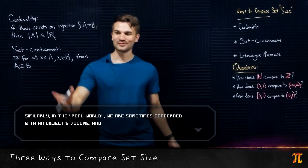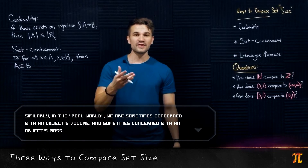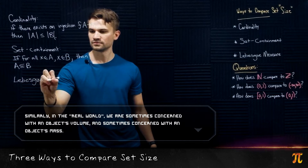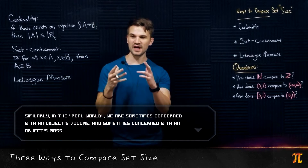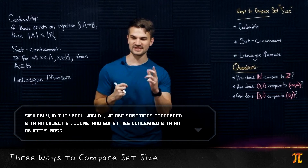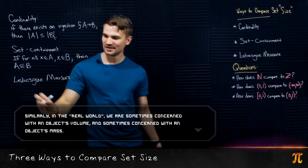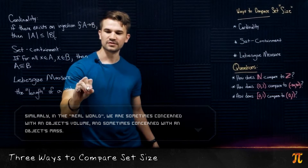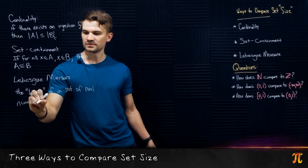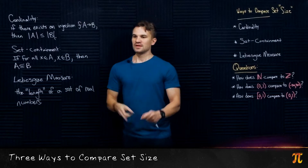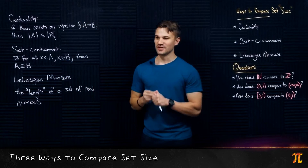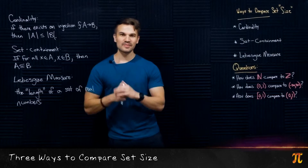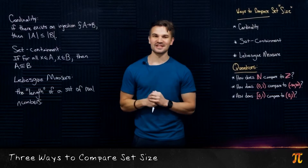Sometimes one of them is appropriate, sometimes the other is appropriate. And finally, Lebesgue measure — the length of a set of real numbers. Now Lebesgue measure is pretty important; you would see this in analysis a lot. So let me give you an example of where the Lebesgue measure is meaningful.